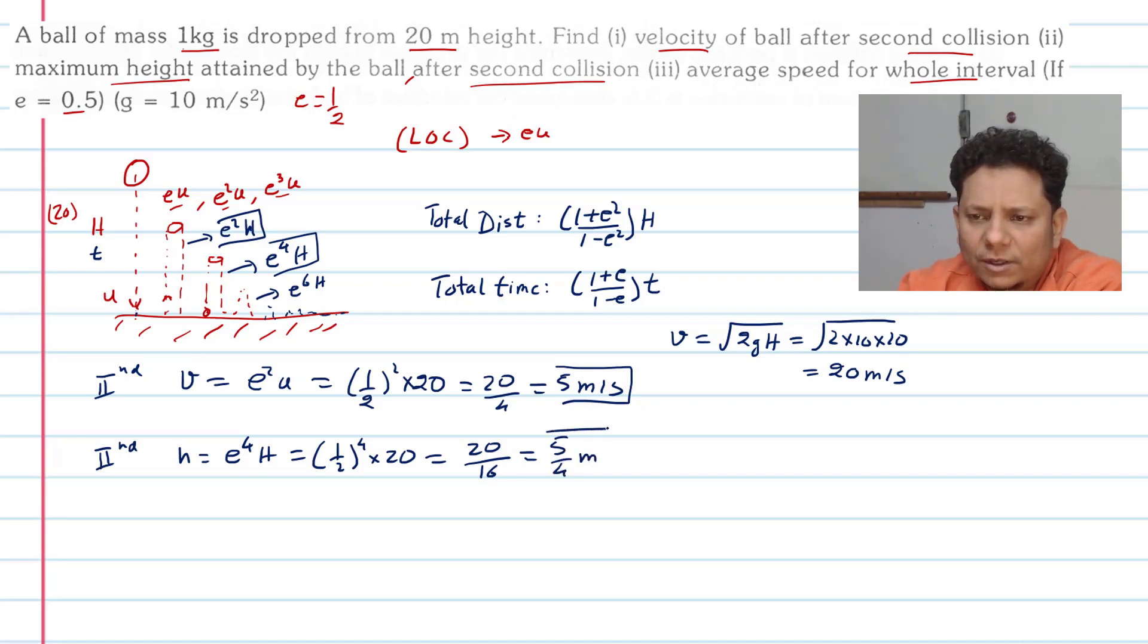Last part is average speed. Now average speed we can use distance over time. For the ball falling 20 meters to the bottom, the time taken will be √(2h/g). This will be equal to √(2×20/10), so this will be equal to 2 seconds. So time t equals 2 seconds.